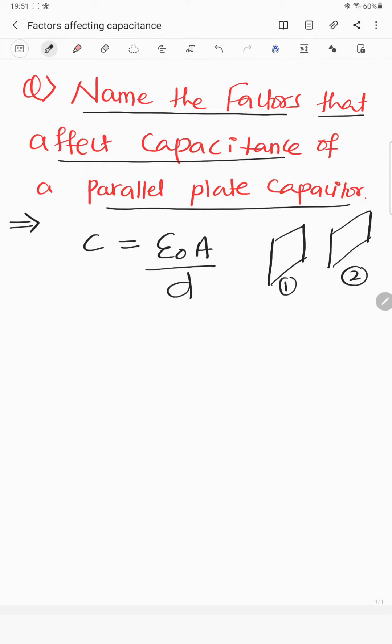If some other medium is there, then definitely this epsilon 0 will change. So first of all, this capacitance depends upon what? Epsilon 0 means it is a permittivity, right? So it depends upon the permittivity of medium between plates. So whatever this capacitance is, this is directly proportional to permittivity of medium between the plates. That is the first thing.